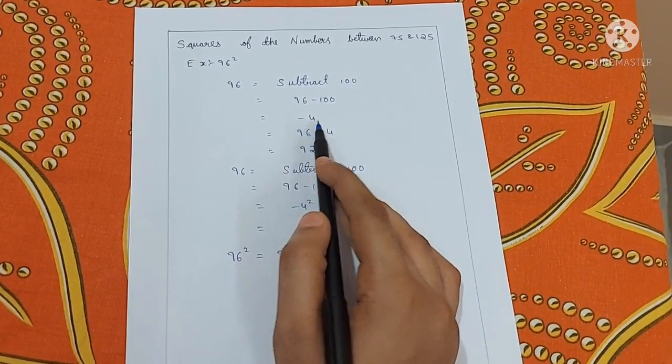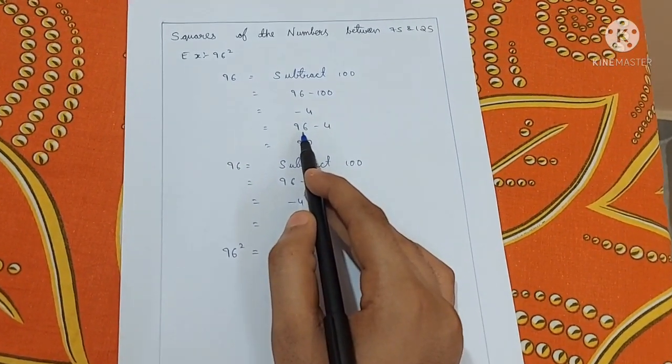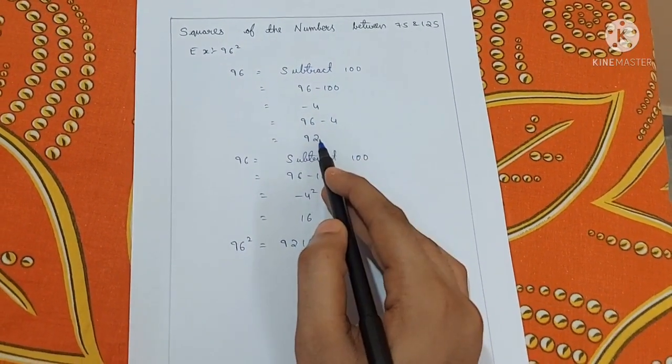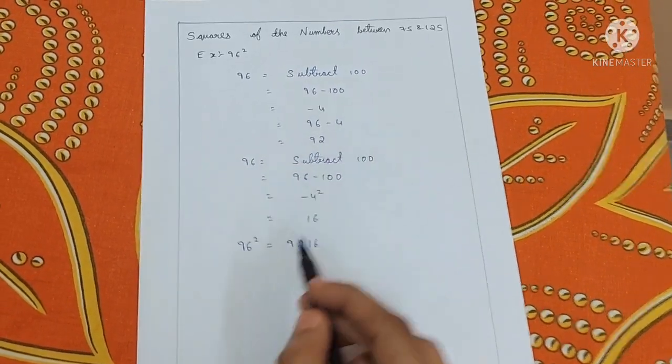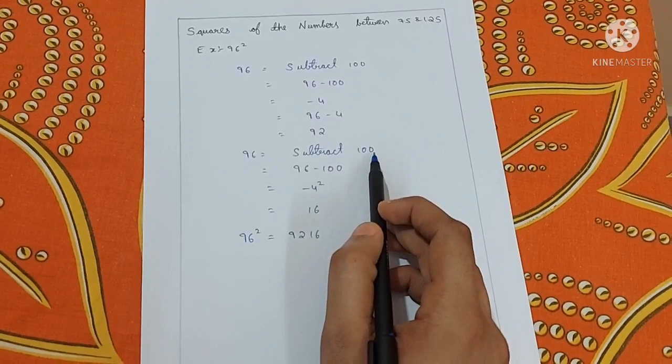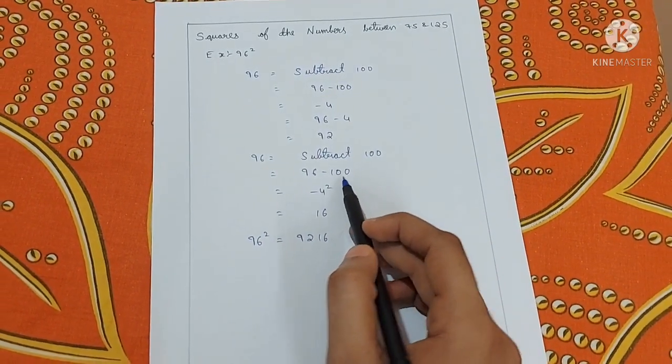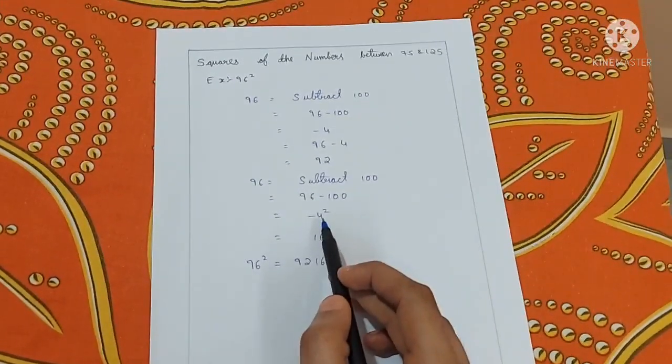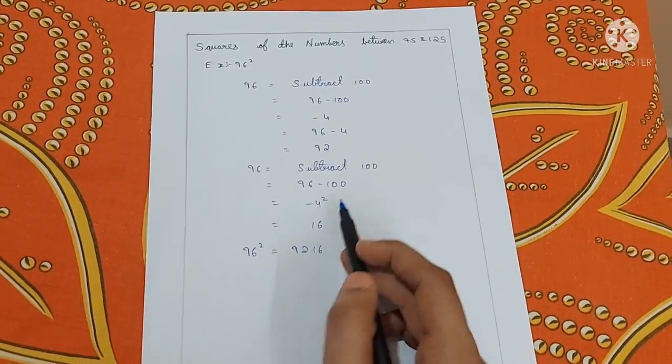we need to subtract it. 96 minus 4 is 92. Take this 92 as the first 2 digit number. Now second step is subtract 100. That is 96 minus 100 which gives minus 4. Now square the number. Minus 4 square is 16.